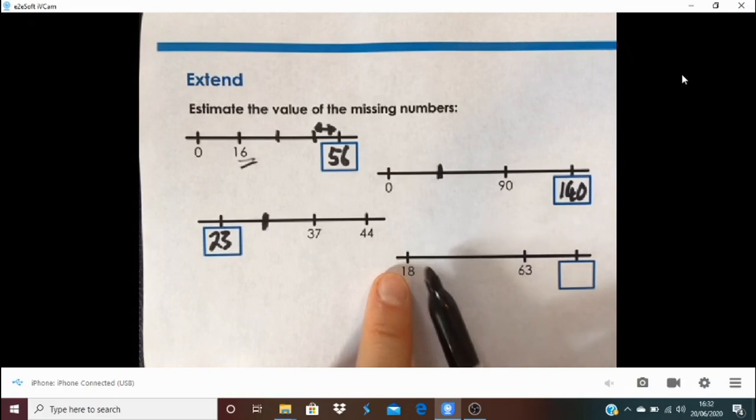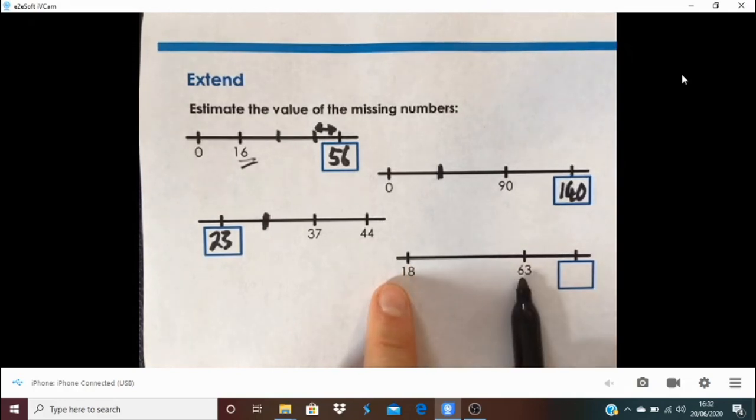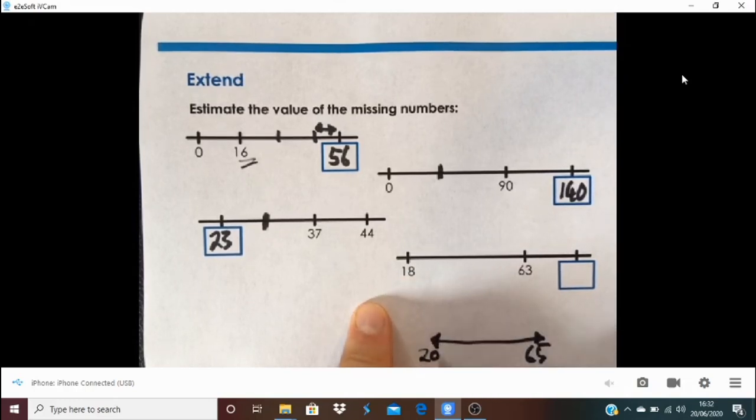Now this one I found a tricky one. 18 to 63, first of all what I worked out for the gap is I thought well that gap will be the same as the gap between 20 and 65. You know that like 20 and 65 will just be slightly further along that line. I found that easier to calculate with.